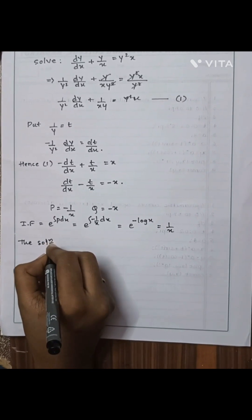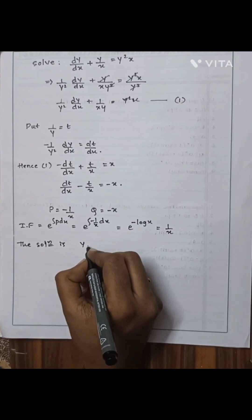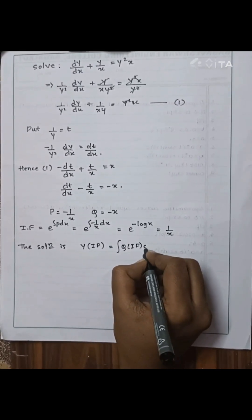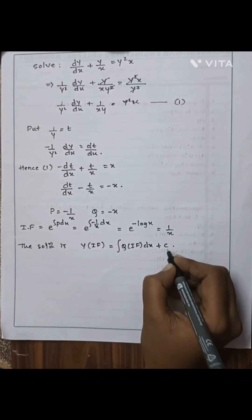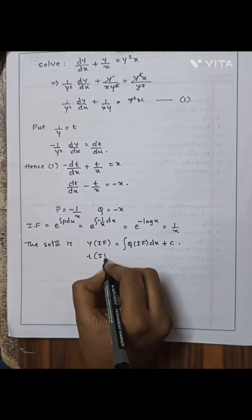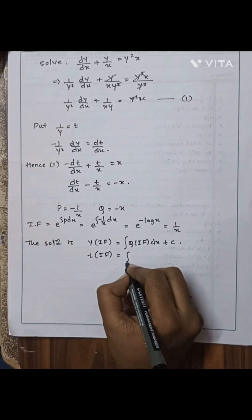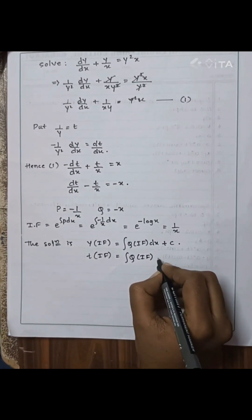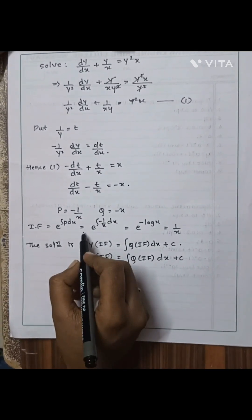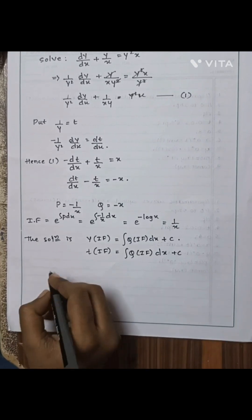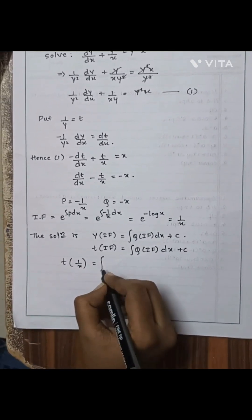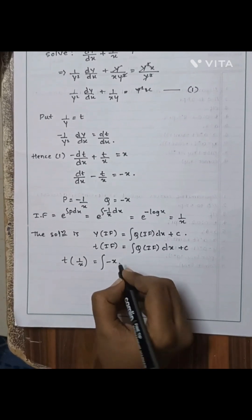The general solution is t · (integrating factor) = ∫Q · (integrating factor) dx + C. By substituting the integrating factor, we get t · (1/x) = ∫(−x) · (1/x) dx + C.